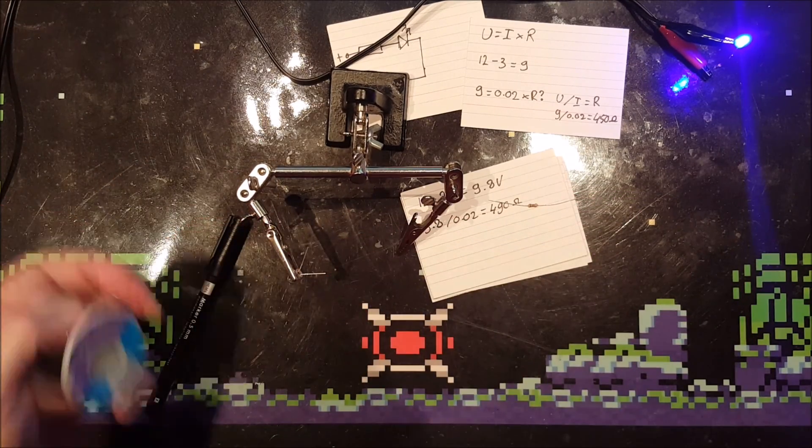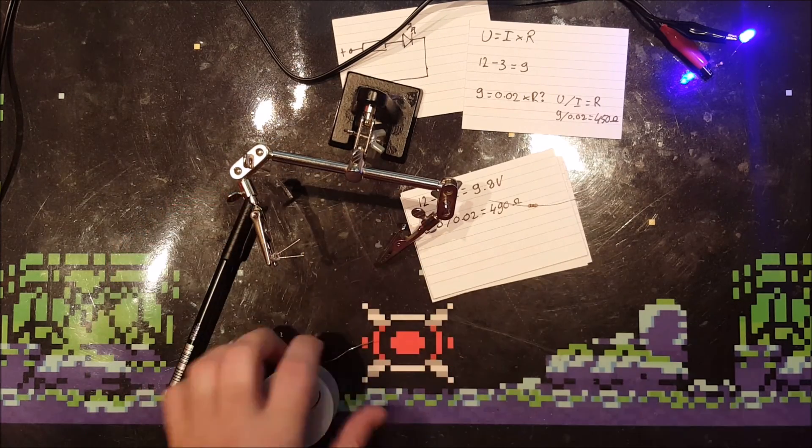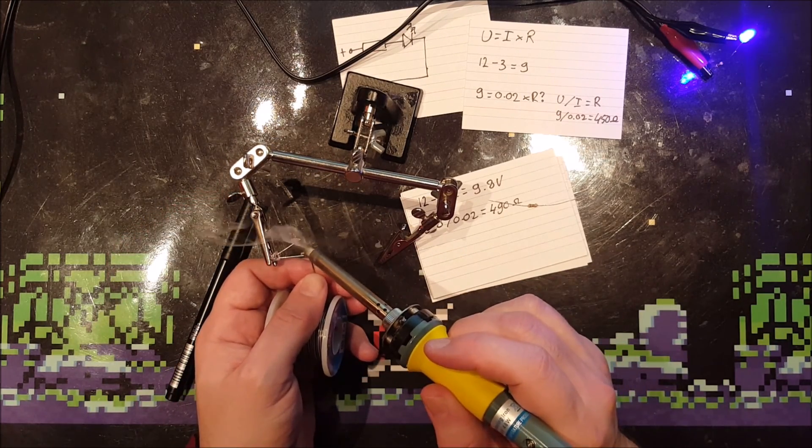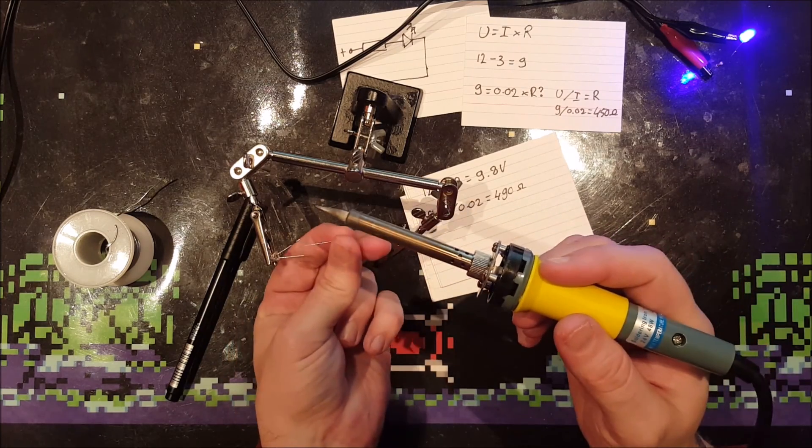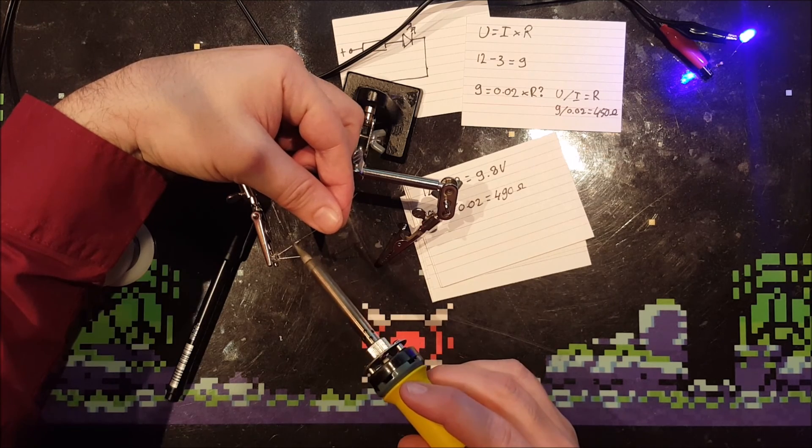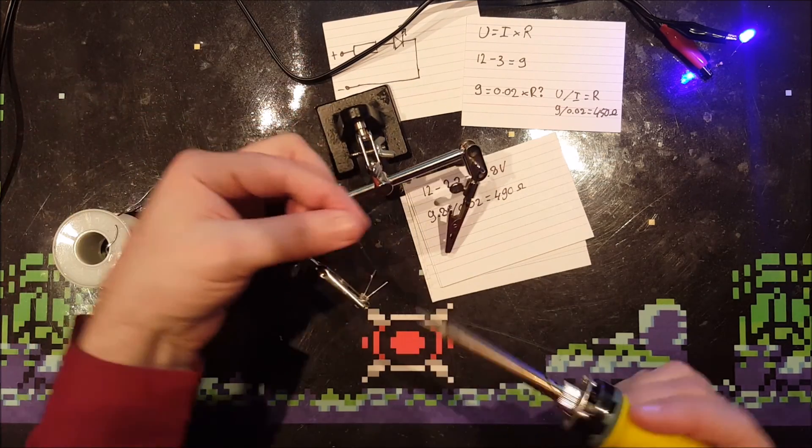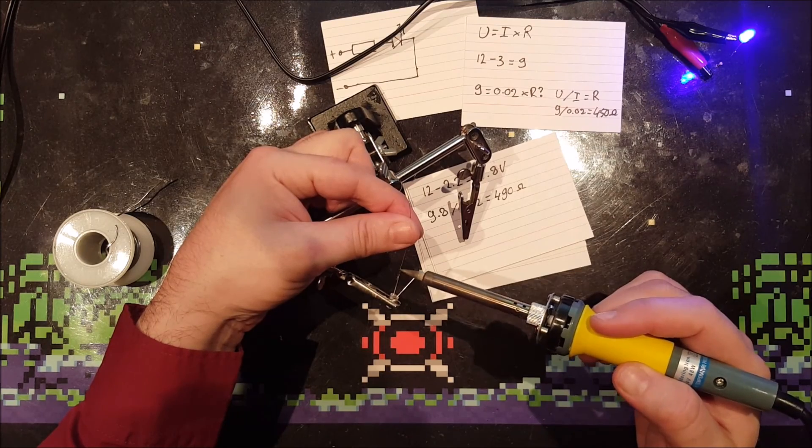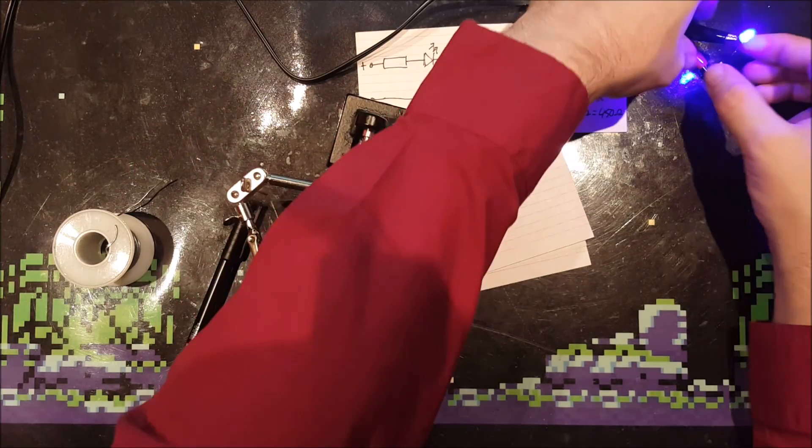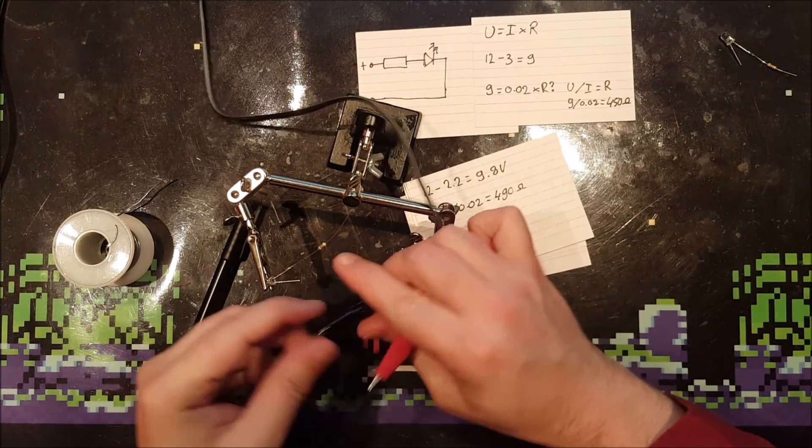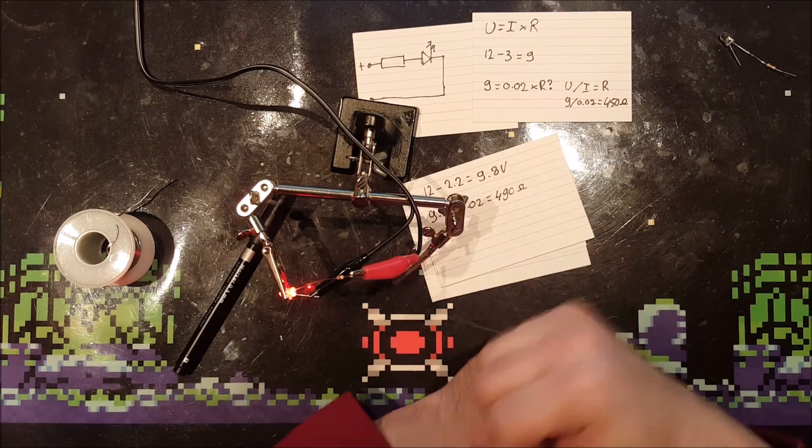Do the same trick again. Still checking the positive and negative of course, so it's a little bit more clear. Put the resistor in line. Terrible soldering on my part. There we go. Let's see what happens. Let's see if my calculations are correct or the LED goes boom. That's correct.